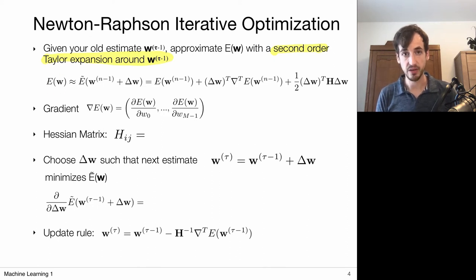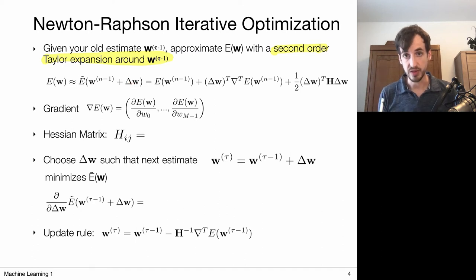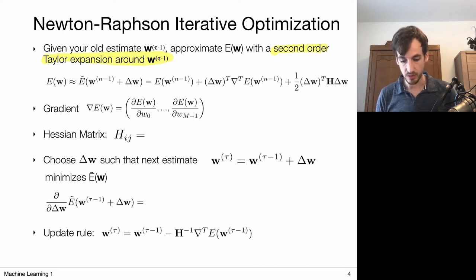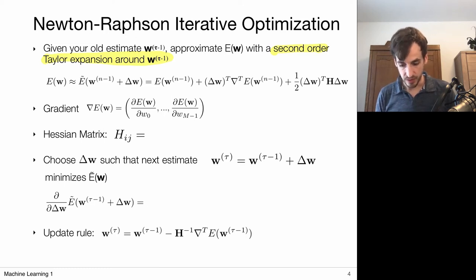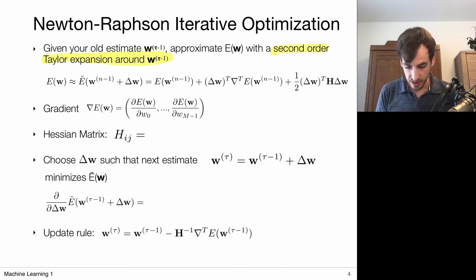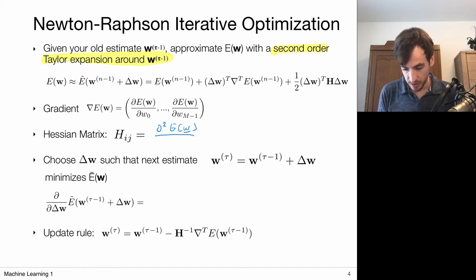This Taylor expansion requires computing first-order multivariate derivatives — the gradient, which we've already done — but also the second-order derivatives, captured in the Hessian. The Hessian is a matrix with rows i and columns j given by the second-order partial derivatives of the error with respect to w_i and w_j. This Hessian matrix is symmetric because the order of differentiation can be exchanged in this vector space.